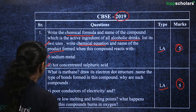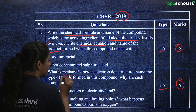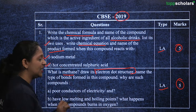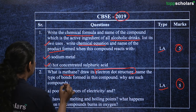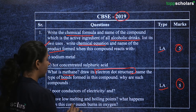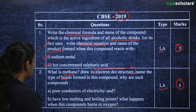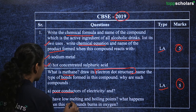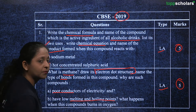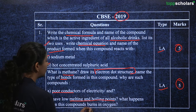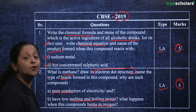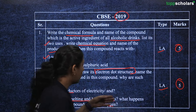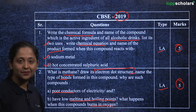The second question from 2019 asks: What is methane? Draw its electron dot structure. Name the type of bonds formed in this compound. Why are such compounds poor conductors of electricity and have low melting and boiling points? What happens when these compounds burn with oxygen? Again, this long answer question contains many short answer parts.